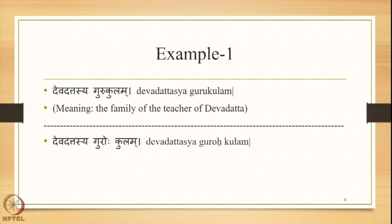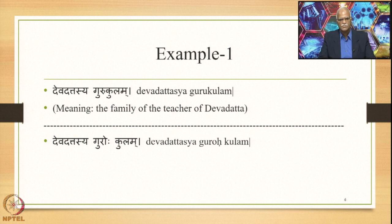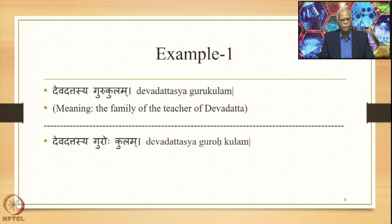Here is an example: Devadattasya Gurukulam — meaning the family of the teacher of Devadatta. This meaning can be derived by following the regular procedure laid down in Paninian grammar. The compound can be dissolved as Devadattasya Gurukulam. Devadattasya is linked with Guru and Guru is linked with Kula as far as meaning is concerned. If Guru and Kula are compounded, this becomes a Tatpurusha compound in which the Uttarapada, Kula, becomes the head.